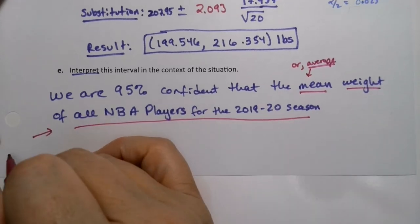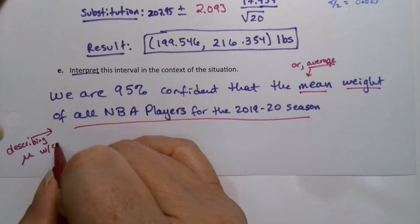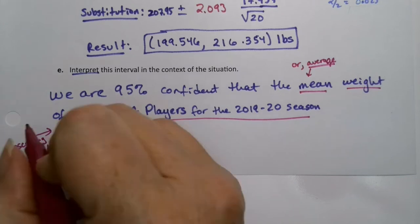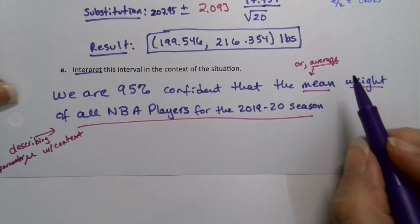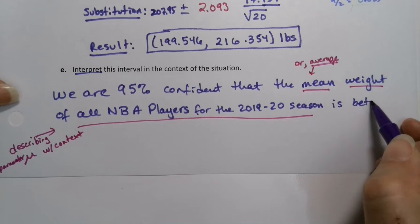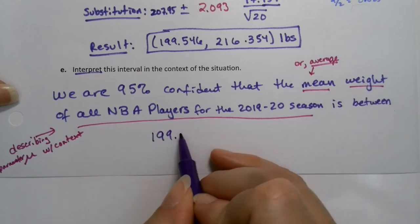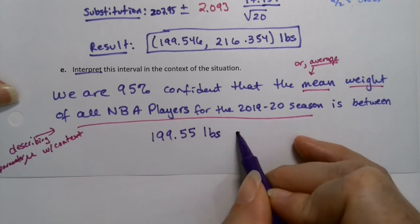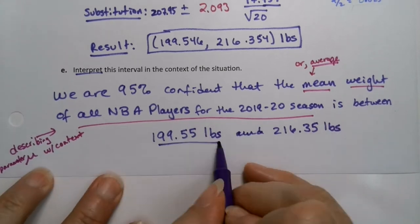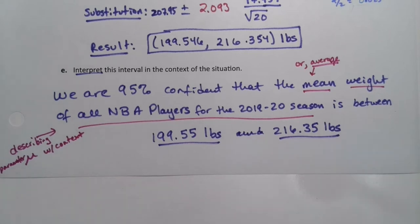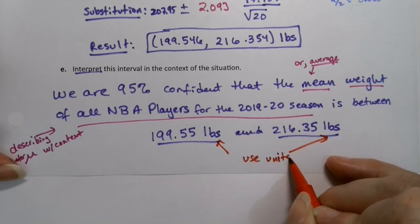Technically, if we restricted our population to the 2019-20 season, then we should say that for the 2019-20 season. Although you can imagine this is probably very similar to seasons around that. So the mean weight of all NBA players for the 2019-2020 season, all of that is describing mu. You're describing your parameter with context. That's the hard part - describing that parameter mu. It's a parameter because it's a population value. We think it's between, so the mean weight is between 199.55 pounds and 216.35 pounds.